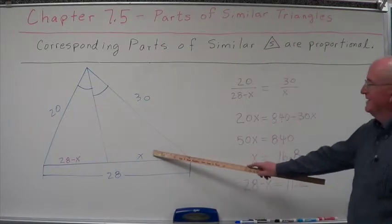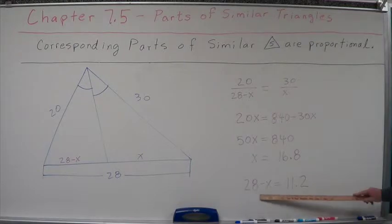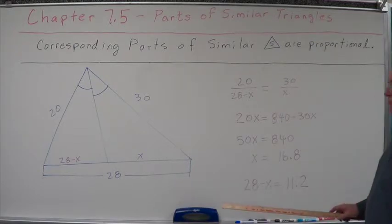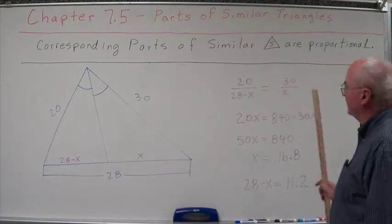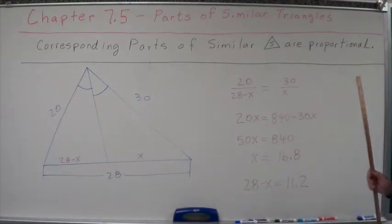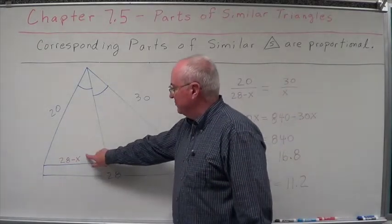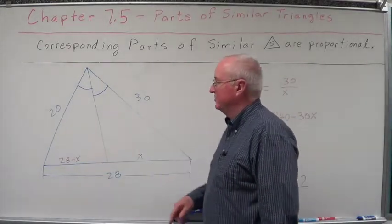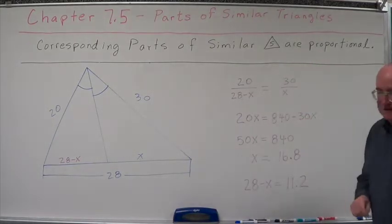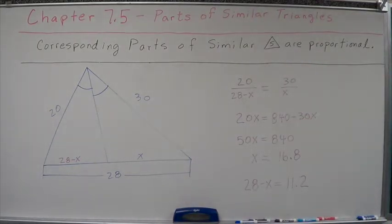So this piece is 16.8. What's the other piece? Well, that's 28 minus x, which is 11.2. So this piece over here is 11.2. Plug those back into here. You'll find out that there are the same proportion or the same ratio. So that's a little more complex where we actually have to take and create this piece so that we can set up the ratios and then set up the proportion and do our cross multiplication. So that ends our discussion on proportions and how they deal with, particularly in triangles and corresponding parts of similar triangles being proportional.